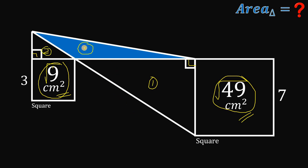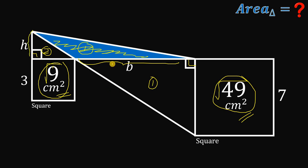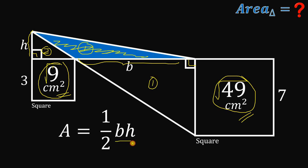Now we want the area of this blue triangle. To find the area, we need the base and the height. Let's call the base B and the height H. The area of this triangle is equal to one-half times base times height. So our goal is to find the value of B times H.